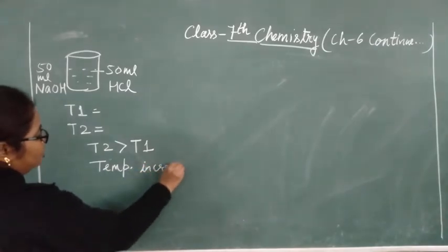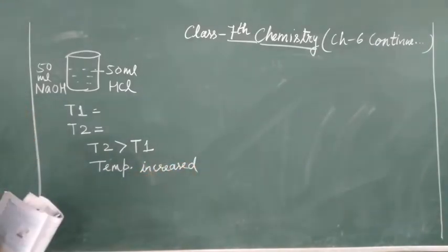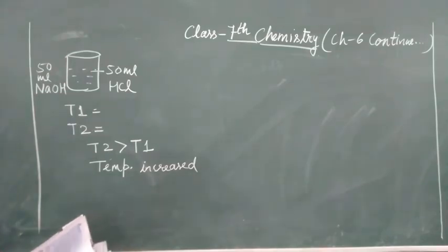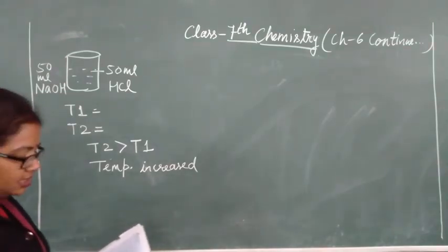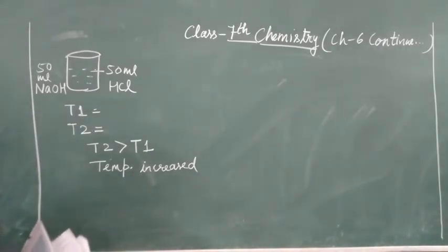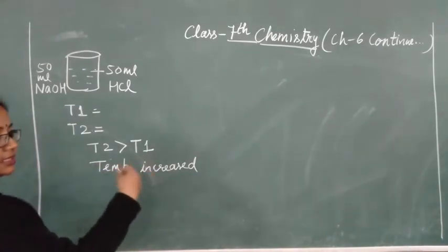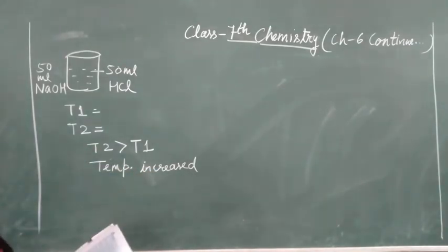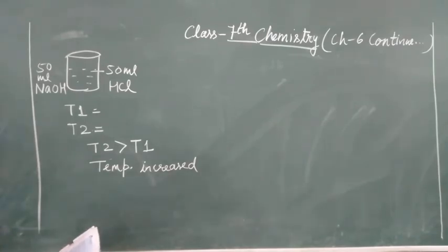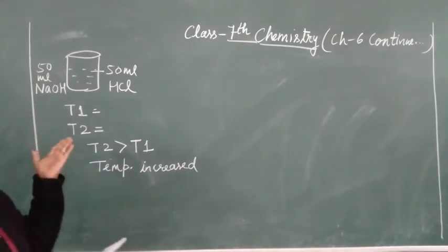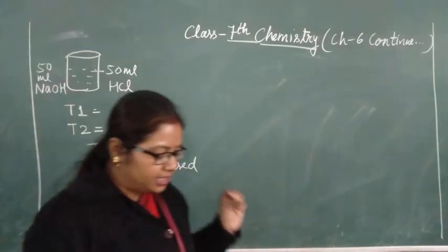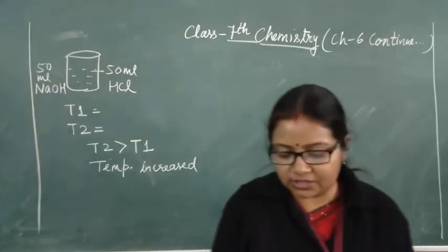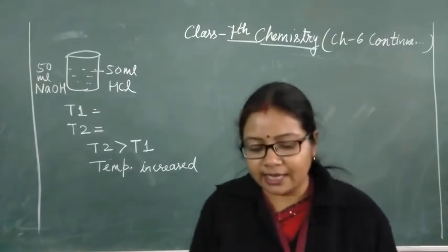After adding sodium hydroxide, we have seen that temperature increased. So the conclusion is that as heat is released, there is a rise in temperature. As heat is evolved, there is a rise in temperature. Thus, the reaction between hydrochloric acid and sodium hydroxide is an exothermic reaction. With the help of this activity, we have confirmed that this reaction is an exothermic reaction.